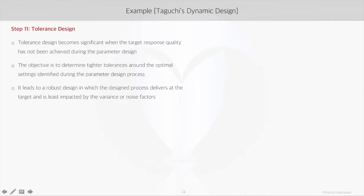If the confirmatory runs show that we have been able to attain the target response quality, then the design objective is met. But in case the target response quality has not been achieved, then the third stage — tolerance design — becomes very significant. Tolerance design focuses on determining tighter tolerances around the optimal settings identified for the factor levels to make the design robust, so that sensitivity to noise and variance is extremely low.